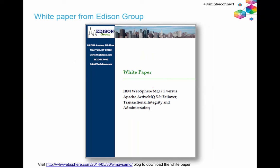Some of the aspects I covered — such as high availability — were researched and published by the Edison Group in 2014. You can download the white paper from the URL listed on this chart and post your comments, questions, or objections on the blog. The research was commissioned by IBM, so take it with a grain of salt, but it was done independently and everything is published openly — the methodology is completely transparent. The white paper covers failover, transactional integrity, and administration topics.